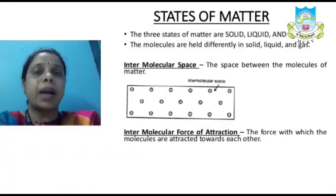Now we will move on to the three states of matter. The three states of matter are solid, liquid, and gas. You have already studied that solids have a definite shape and a definite volume. Liquids have a definite volume but not a definite shape. Gases neither have a definite shape nor a definite volume. We are going to learn in detail about the properties of the three states of matter.